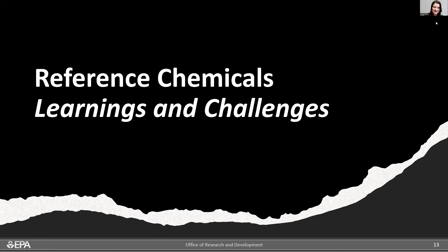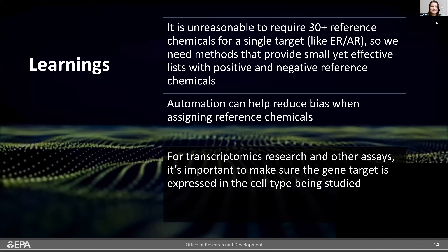Some learnings and challenges: it's unreasonable to require 30 or more reference chemicals per target as established for estrogen and androgen receptor. We need methods that provide small but effective lists with positive and negative reference chemicals. Automation helps reduce bias. For transcriptomics, it's important that the gene target is expressed within the cell type studied, and expressed at a sufficient level — perhaps around 30 to 50 counts per million — to detect downstream impacts.